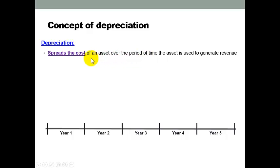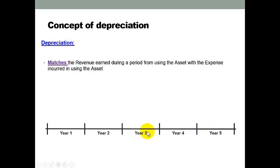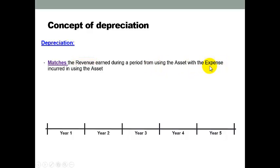For example, if I buy a car for a period of four years, then we are going to spread the cost of the depreciation of that car — the loss of value — over that four or five year period. Importantly, it also matches the revenues to the expense, being the depreciation that is incurred in using that asset. So it's important to match the revenue with the depreciation expense.